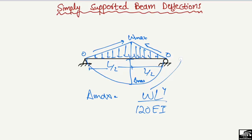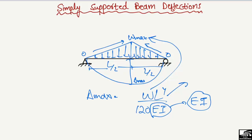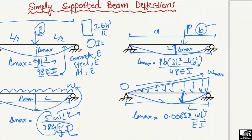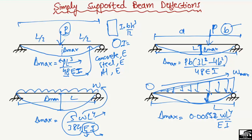In all these cases, W is the load, L is the total length, and EI is the stiffness of the beam — the product of the modulus of elasticity E and the moment of inertia I. EI appears in all the deflection formulas. Once you have E and I, you can easily calculate the maximum deflection for any of these simply supported beam cases. Hope you understood — please subscribe to the channel. Thank you for watching.